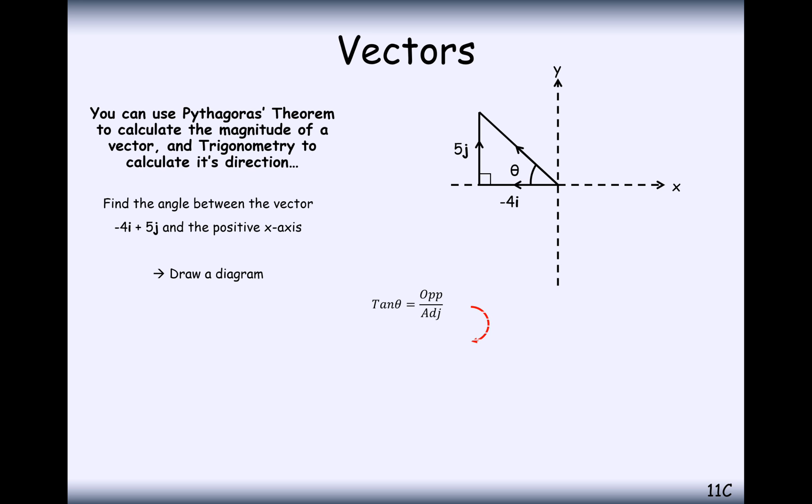That is this angle round from here to here. Eventually, we're going to want to work out alpha. But let's work out theta first, and it's just another right-angled triangle problem where we've got tan theta coming in to help us out.